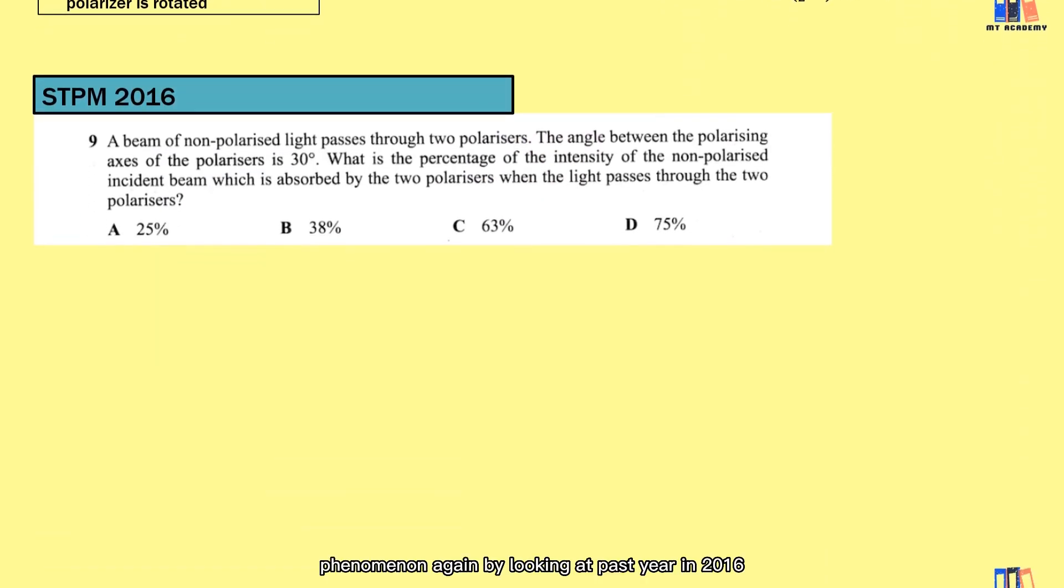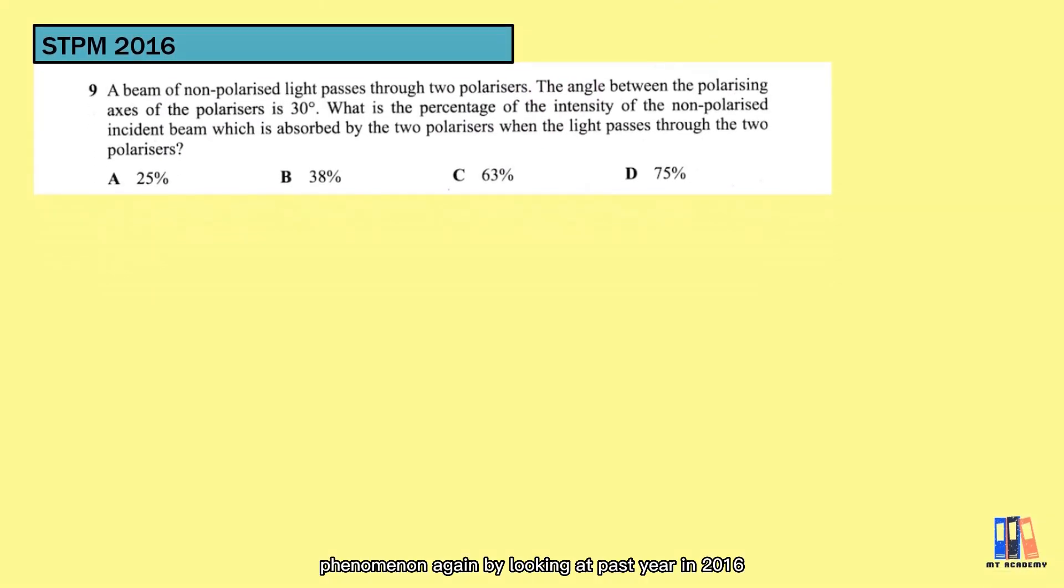Let's review the phenomenon again by looking at STPM 2016. A beam of non-polarized light passes through two polarizers. The angle between the polarizing axes of the polarizers is 30 degrees. Here is the recap.